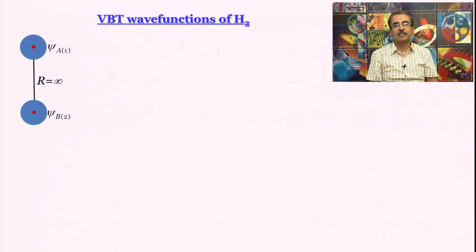What happens in this situation? When they are sufficiently far away then we can assume that electron number 1 is in 1s orbital of A and electron number 2 is in 1s orbital of B. A and B stand for the two atoms or in other words the two nuclei.